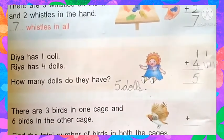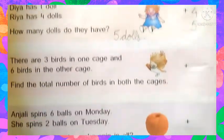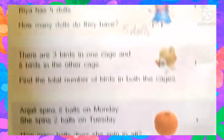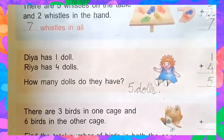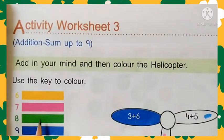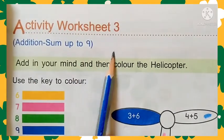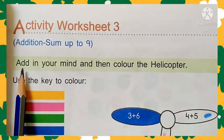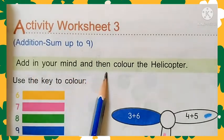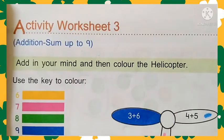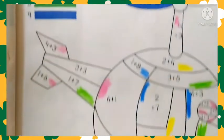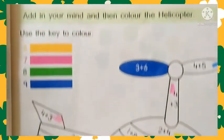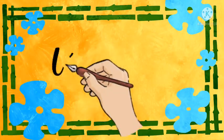You have to complete this exercise yourself. Children, in this space — activity worksheet three. Addition sum up to nine. Add in your mind and then color the helicopter. In this space there is a picture of a helicopter, and you have to color it yourself. Thank you.